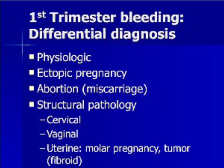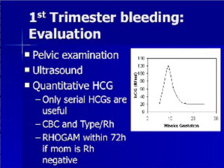The differential diagnosis of patients with first trimester bleeding includes physiologic bleeding that occurs in a large percentage of normal pregnancies. Ectopic pregnancy is the important, life-threatening diagnosis that must always be considered. Miscarriage is another very common cause of first trimester bleeding. Structural pathologies such as cervical and vaginal anomalies, molar pregnancy, and fibroids are less common causes. Every patient with first trimester bleeding should undergo pelvic examination to assess whether the cervical os is open or closed and whether fetal tissue is present. Most patients will also require a pelvic ultrasound and a quantitative HCG level.